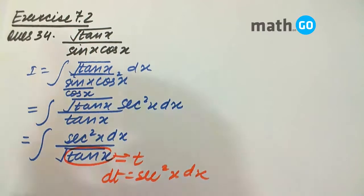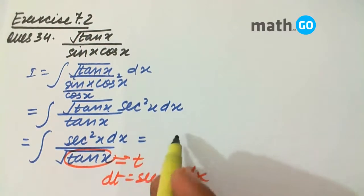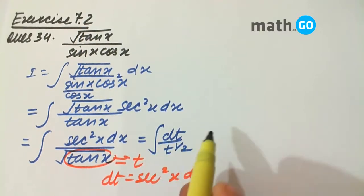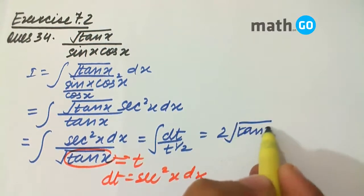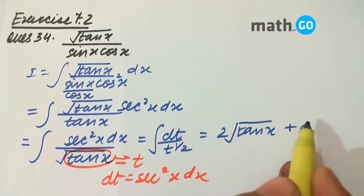So, our expression will become dt by t ki power 1 by 2 ka integral, which is nothing but 2 into t ki power 1 by 2 plus c. 2 into t ki power 1 by 2 is this plus c.